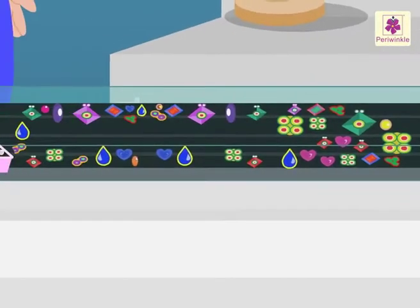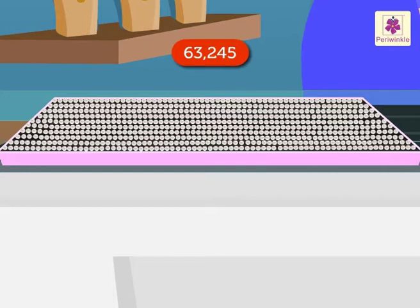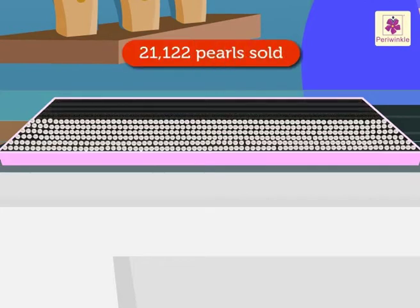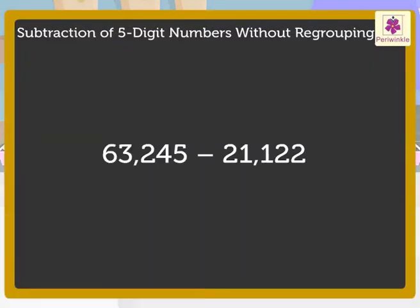Hey, look at those shiny pearls! She has 63,245 pearls. She sold 21,122 out of them. How many pearls are left with Ruby? Let us begin.